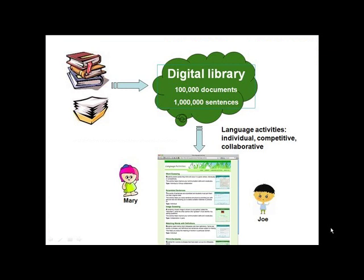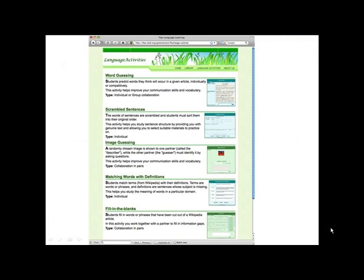Digital libraries typically contain a large number of documents and a huge number of sentences. The FLAX system can automatically extract from this large collection examples for you to use in your exercises. We've created a number of different kinds of language activity. In some, students work individually. In others, students compete with one another, and in still others, students collaborate with each other. If we zoom in on the screen at the bottom, you can see a selection of language activities available in the FLAX system: word guessing games, scrambled sentences games, image guessing games, matching words with definitions, fill in the blanks — several different exercise types, all based on sentences drawn from the digital library.